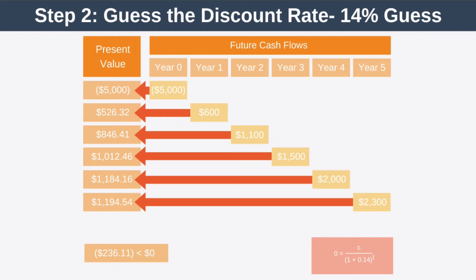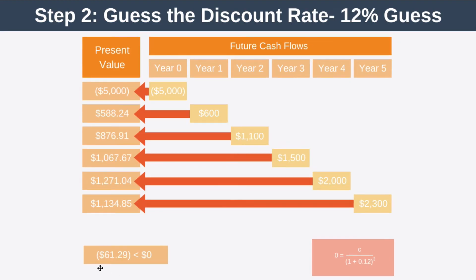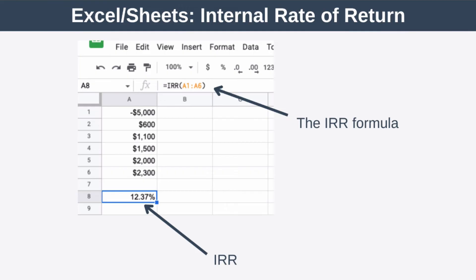So let's try again. At this point, we know IRR is above 10% but below 14%, so this time we'll guess a discount rate of 12%. This gives us a net present value of minus $6,129. We're really close, but our net present value is still a bit negative, which means we have to increase our IRR guess a bit. And if we keep guessing in this way, we'll eventually find that a discount rate of 12.37% results in an NPV of zero. So we can say that the IRR for this project is 12.37%.